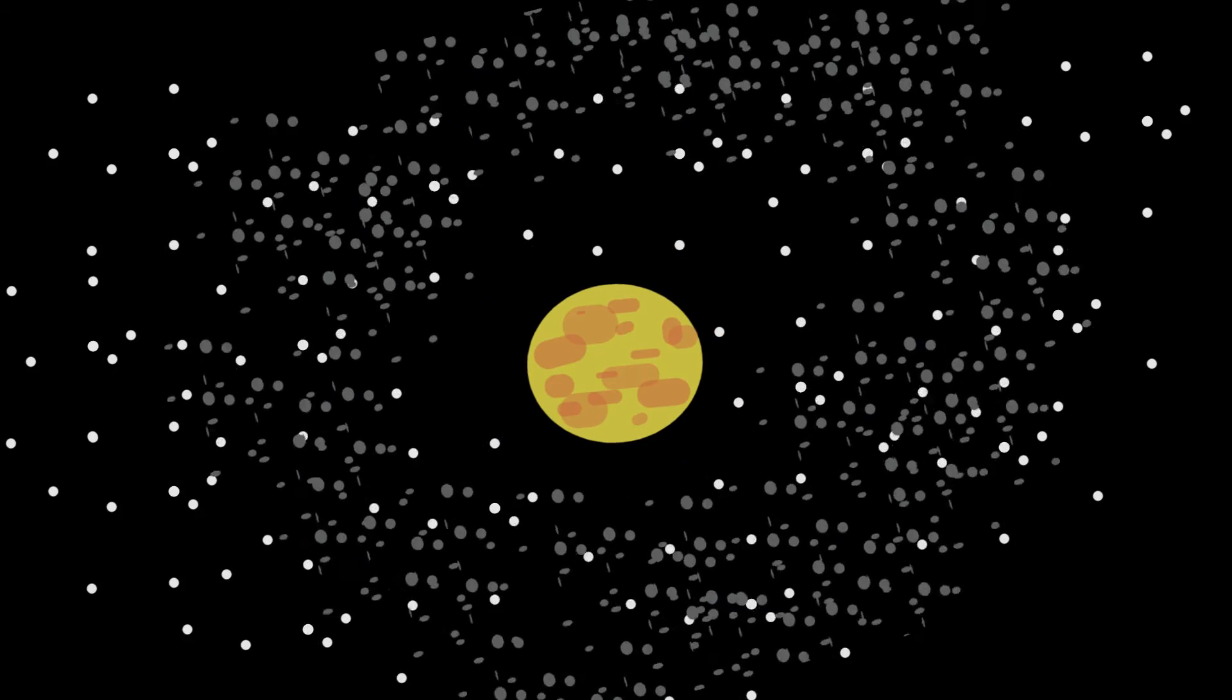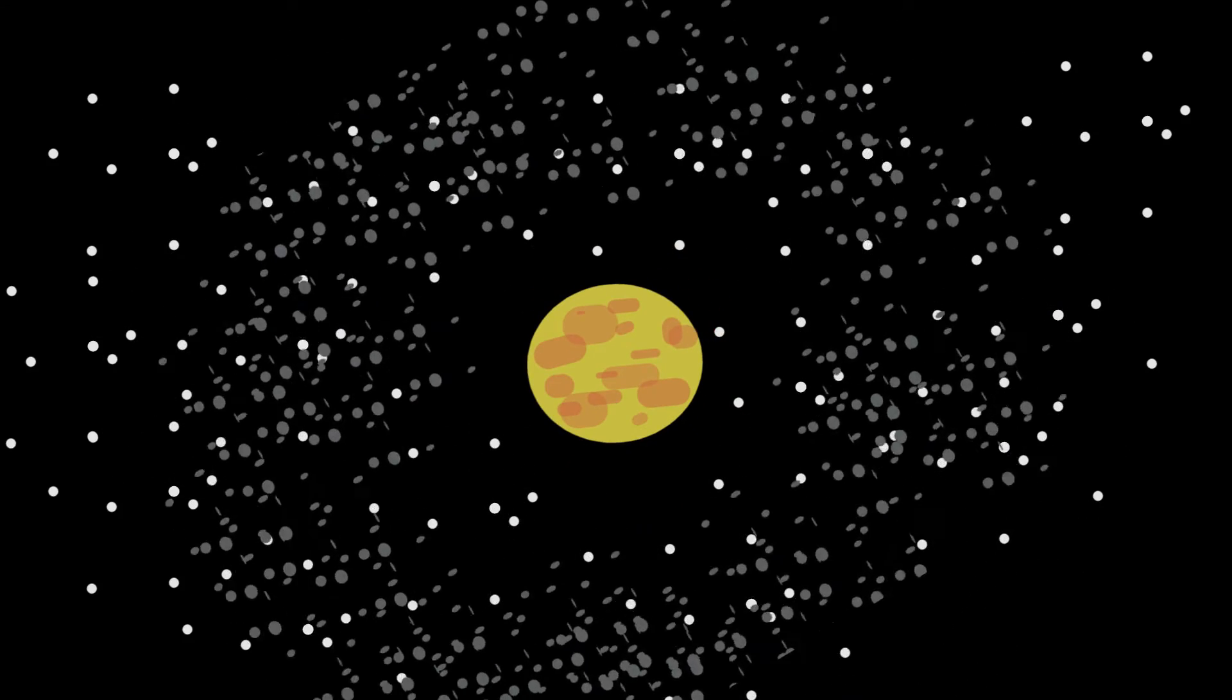To answer this, we must go back 4.6 billion years ago, where the Earth was created. The Sun took about 99.99% of the mass in our solar system. The leftover matter, however, formed the planets, one of which being Earth.